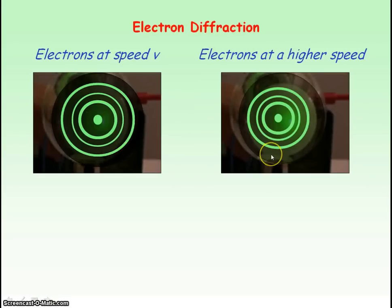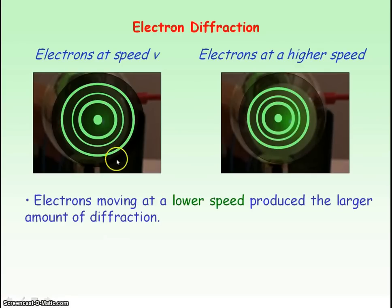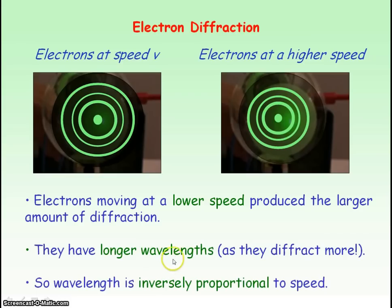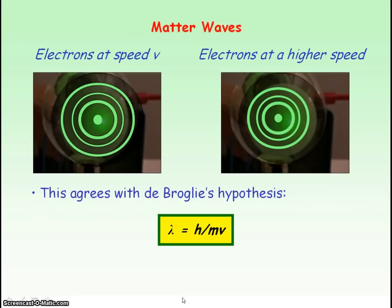Here we have electron diffraction patterns for electrons travelling at two different speeds. The electrons travelling at the lower speed produce a larger amount of diffraction — more spreading of the bright rings, so larger spacing between them. A larger amount of diffraction means these electrons have a longer wavelength, which means wavelength is inversely proportional to the speed of the electrons. This agrees with de Broglie's hypothesis.